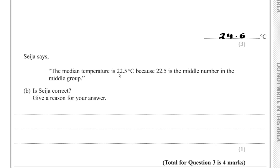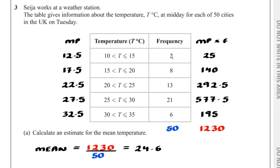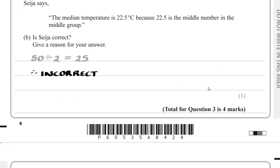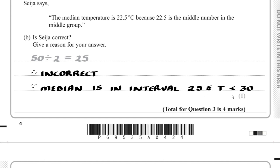Siger says the median temperature is 22.5°C because 22.5 is the middle number in the middle group. Part B: Is Siger correct? We have 50 pieces of data, so the median is the 25th value. The cumulative frequencies are 2, 10, 23, and then adding 21 gives 44. The 25th value falls in the interval 25 < T < 30. So Siger is incorrect because the median is in the interval 25 < T < 30.